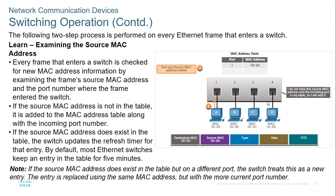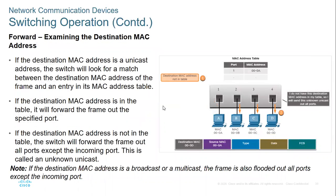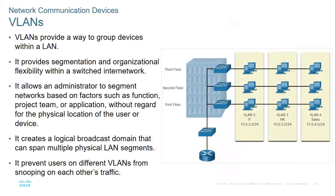For example, you have a brand new switch with PCA connected on port one. The switch will record port one and the MAC address learned through that port. This is why, when the switch receives information, it knows exactly which port to forward it to. When PC B connects, the switch similarly learns its MAC address and stores it in the MAC table.